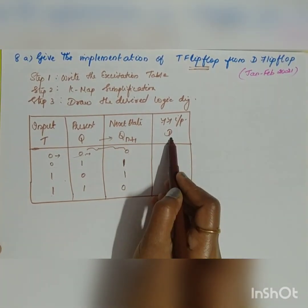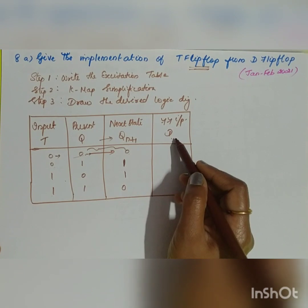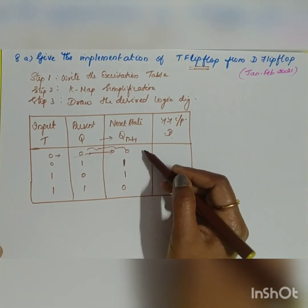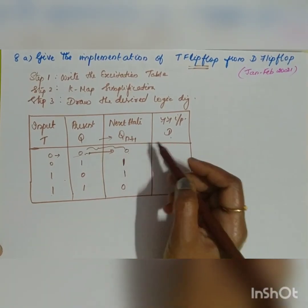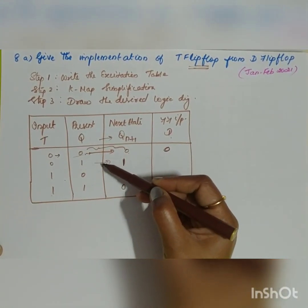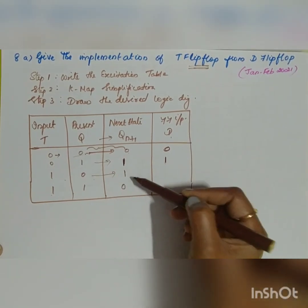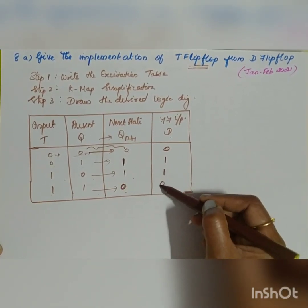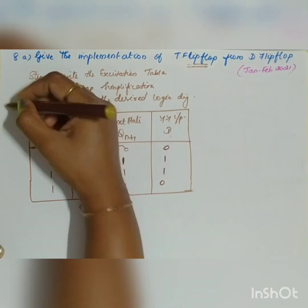From the present state and next state, we find the input to the D flip-flop. The D flip-flop (data or delay flip-flop) outputs whatever is at its input, so the D input equals the next state Q(n+1). For transitions 0→0, 0→1, 1→0, and 1→1, the D inputs are 0, 1, 0, and 1 respectively. This completes step 1.